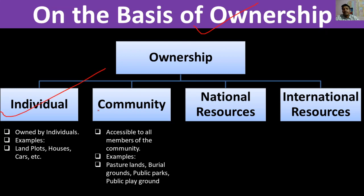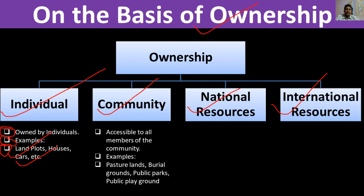On the basis of ownership, resources are classified as individual, community, national, and international. Individual resources are personal belongings — for example, your house, phone, TV, bike, or bicycle. These are your personal resources and you have rights over them.